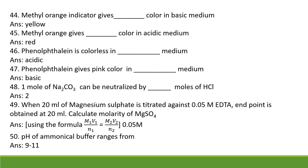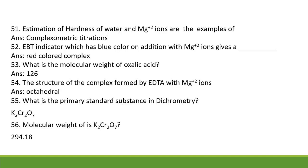What is the pH of ammonical buffer? It ranges from 9 to 11. Estimation of hardness of water and Mg²⁺ ions are examples of complexometric titrations.